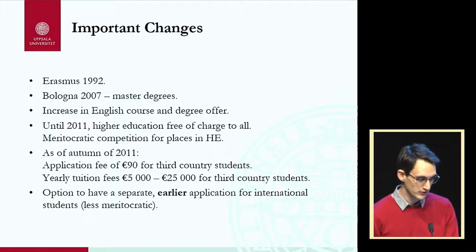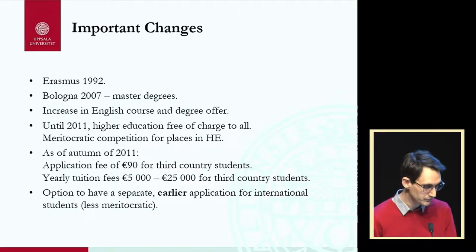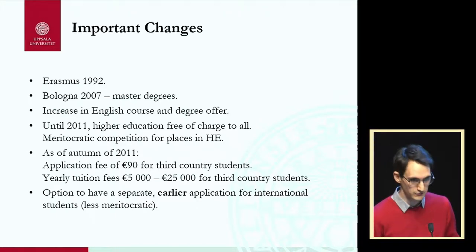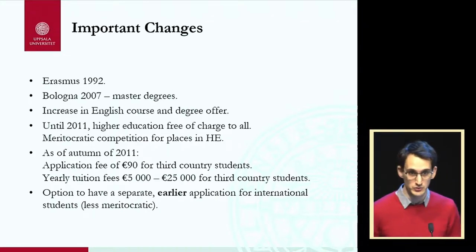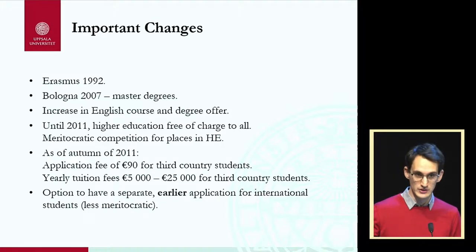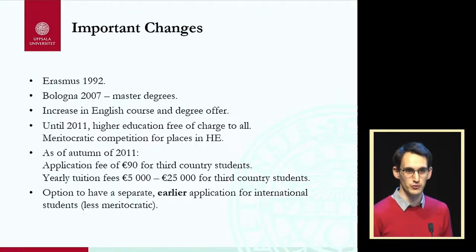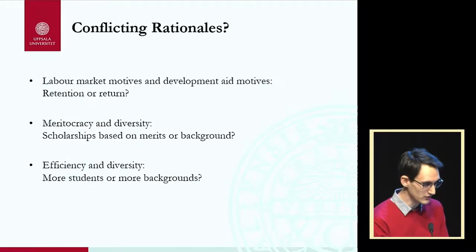As of autumn 2011, there is an application fee and yearly tuition fees ranging from 5,000 to 25,000 euros per year, with an average of about 12,000. Since a few years back, universities can arrange a separate application round for international students so they can apply at the end of autumn or beginning of the year for the following autumn. Speed is an advantage — we want to attract students before they say yes to a spot in another country, as they often choose between many countries.